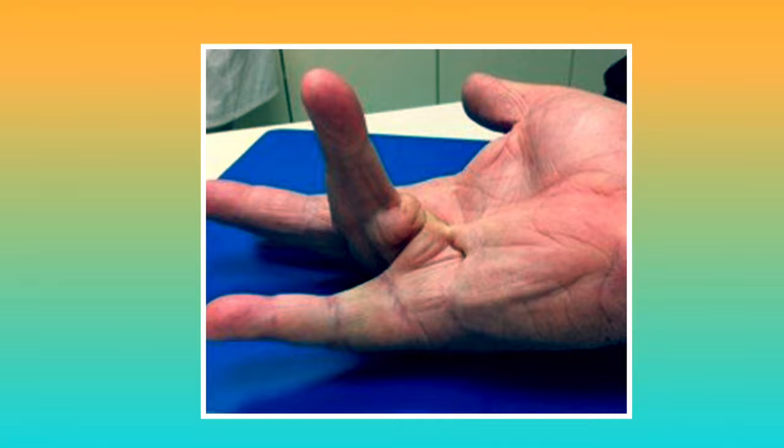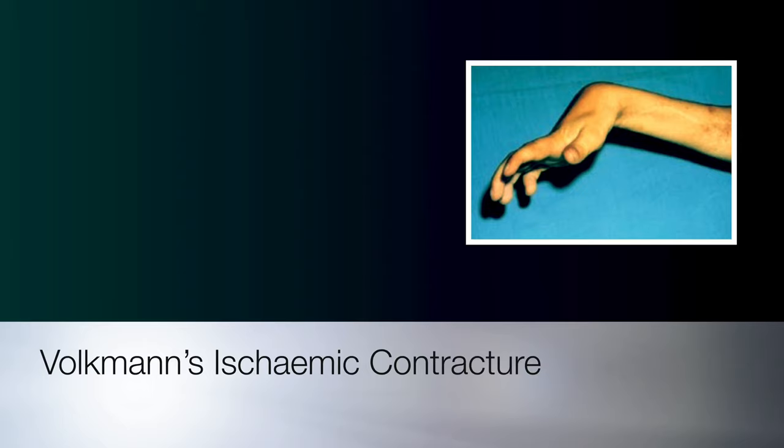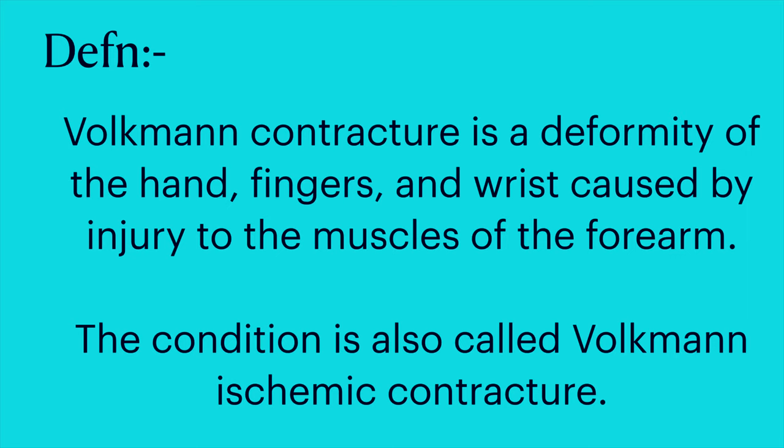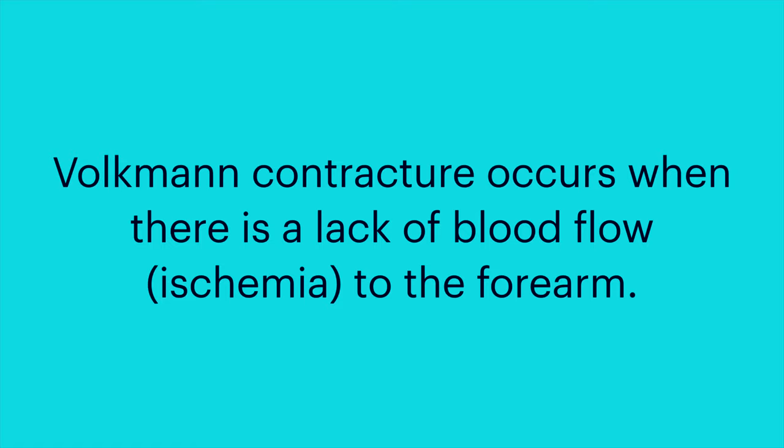Coming to Volkmann's ischemic contracture — it is a deformity of the hand, fingers, and wrist caused by injury to the muscles of the forearm. Volkmann's contracture occurs when there is a lack of blood flow, or ischemia, to the forearm. This occurs when there is increased pressure due to swelling, a condition called compartment syndrome. Injury to the arm, including a crush injury or fracture, can lead to swelling that presses on the blood vessels and decreases blood flow to the arm.